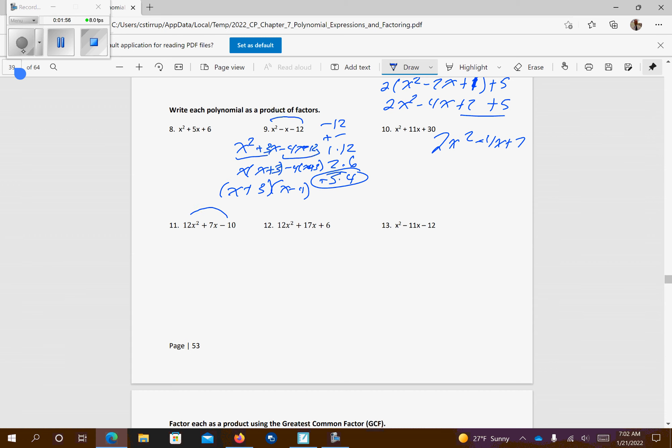Number 11, multiply first and last together, so we're going to get negative 120. We know we have alternating signs, so factors of 120: 2 and 60, 3 and 40, 4 and 30, let's see, 5 and 24, 6 and 20.